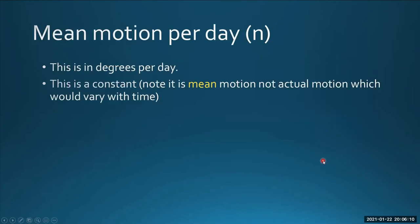The mean motion per day is pretty straightforward. It's however many degrees the object is moving per day, and it's a mean motion. We know from Kepler that objects move more quickly when they're close to the sun than when they're far out in the solar system.